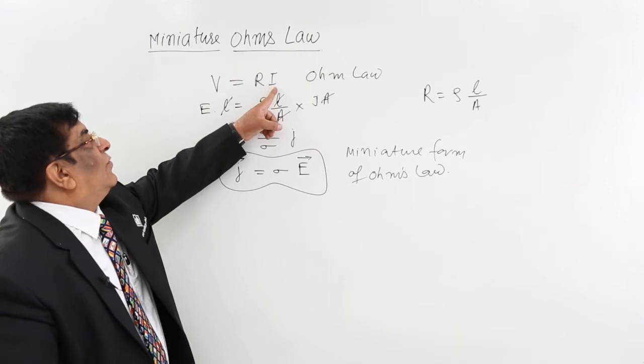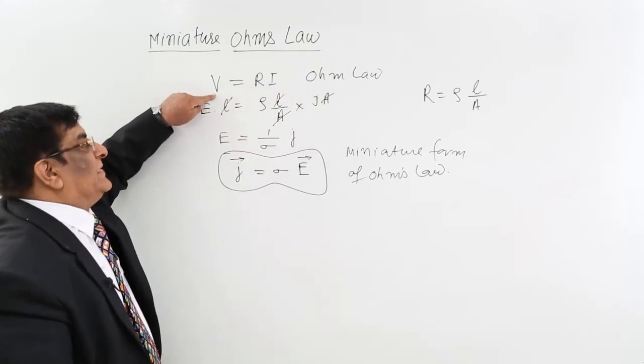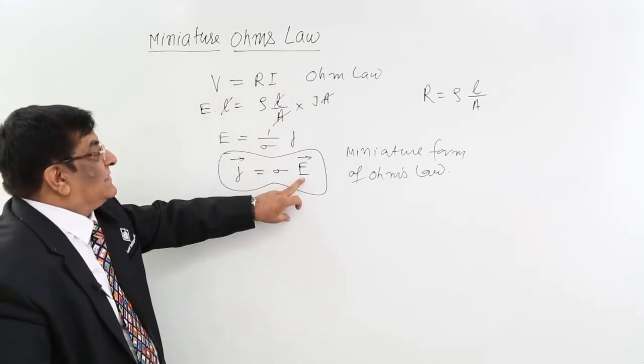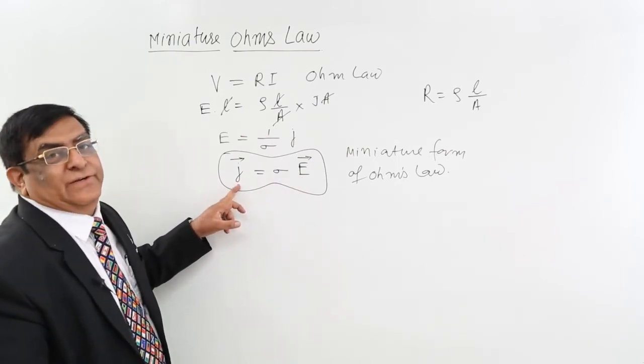I is a scalar quantity. V potential difference is also a scalar quantity. E is a vector quantity. J is also a vector quantity.